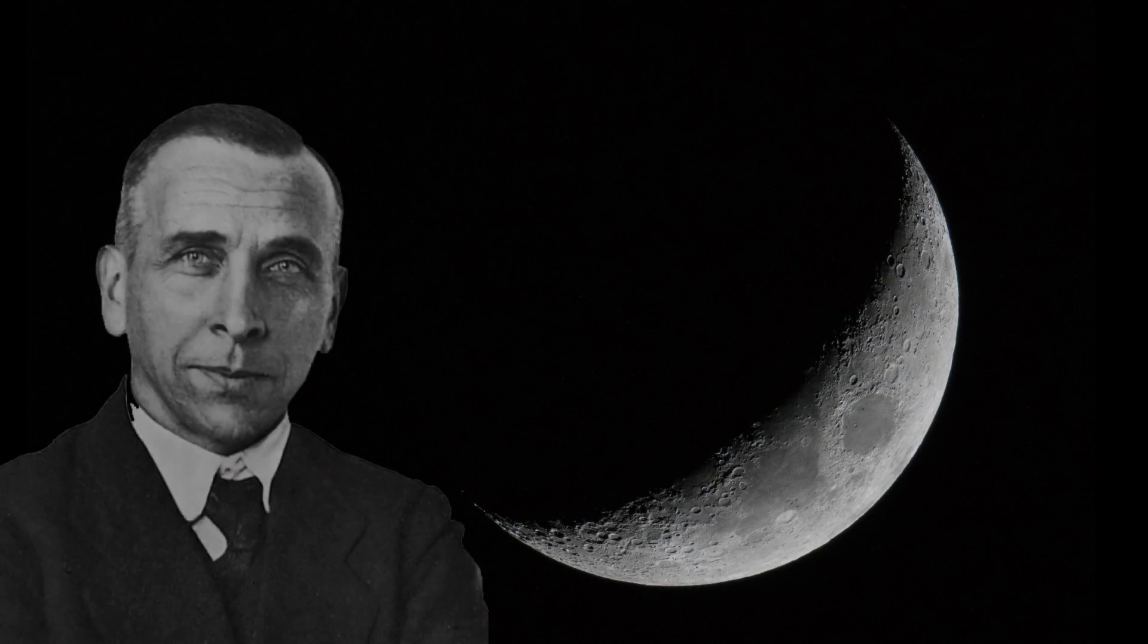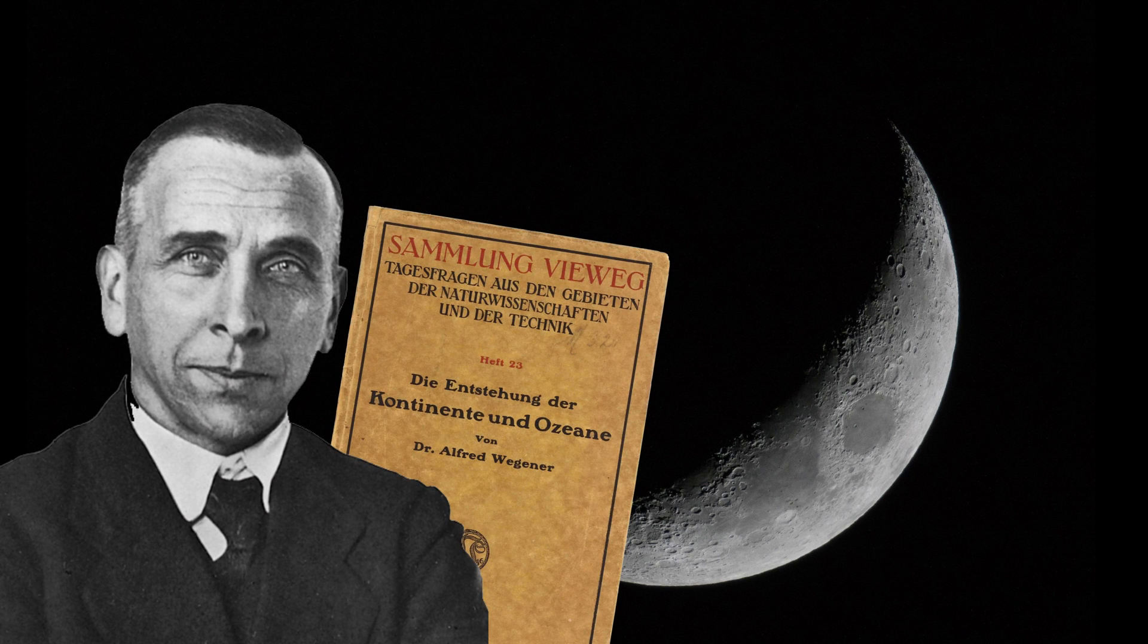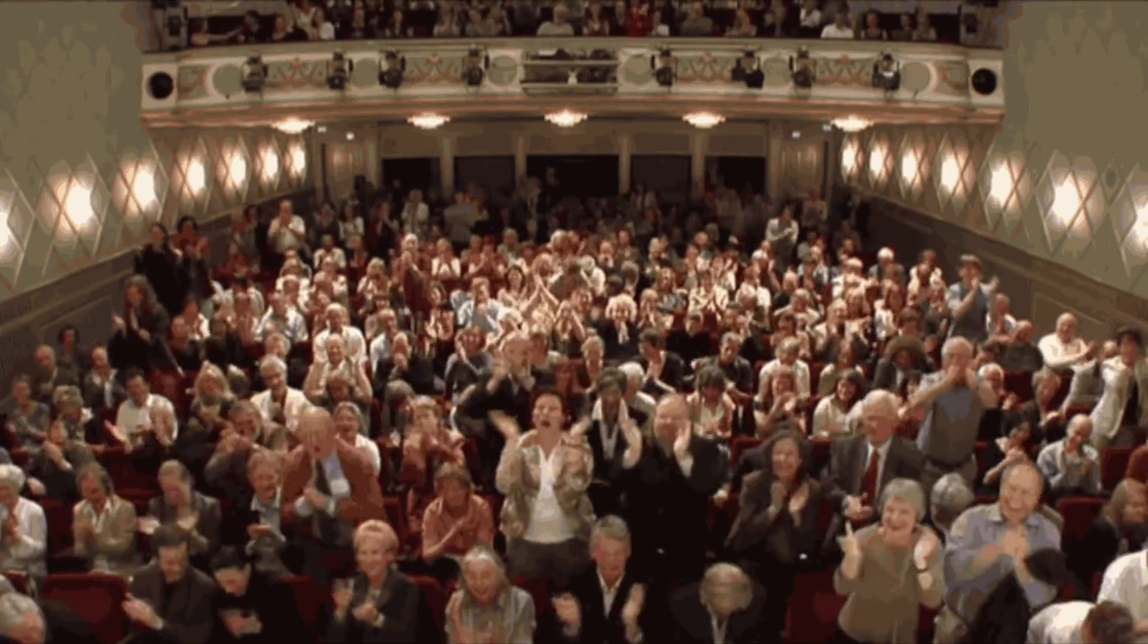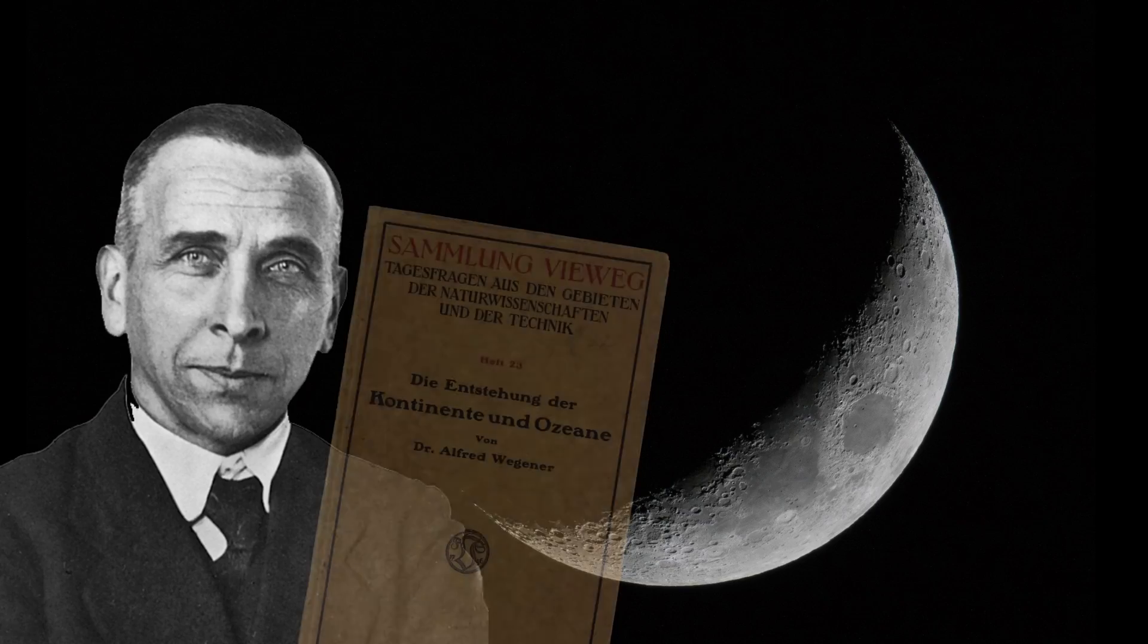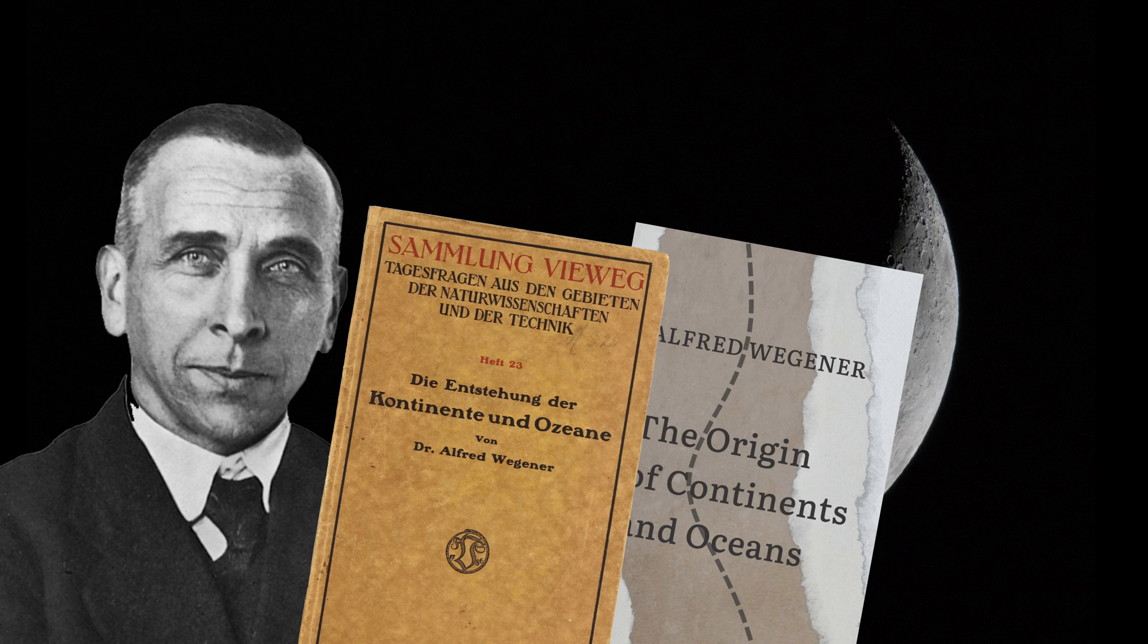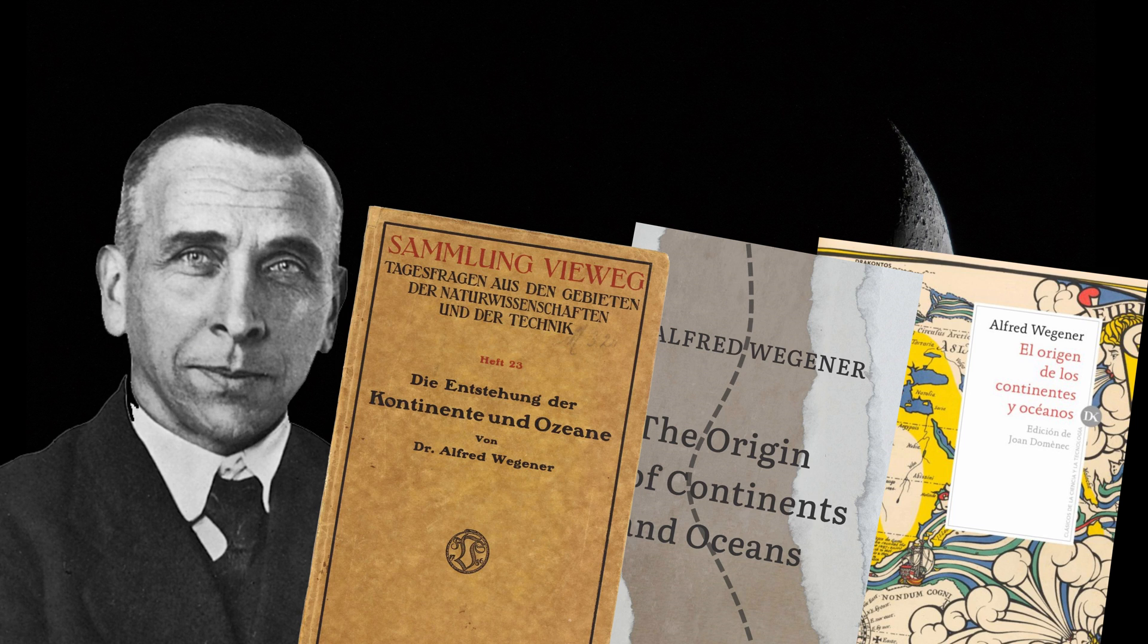Exultant, he finished his book called The Origin of Continents and Oceans. He thought people would applaud him in the streets and give him a Nobel Prize or something like that. In 1924, his book was translated into English, German, Russian, and Spanish. And then the criticism started pouring in. Almost no one believed him.